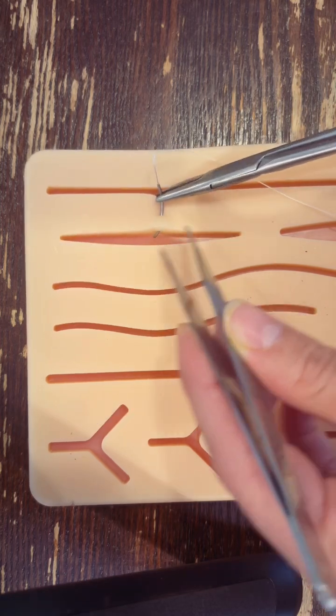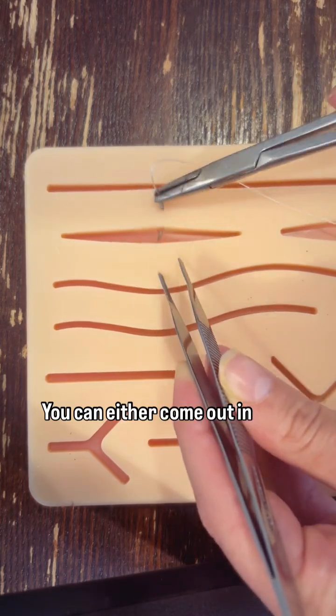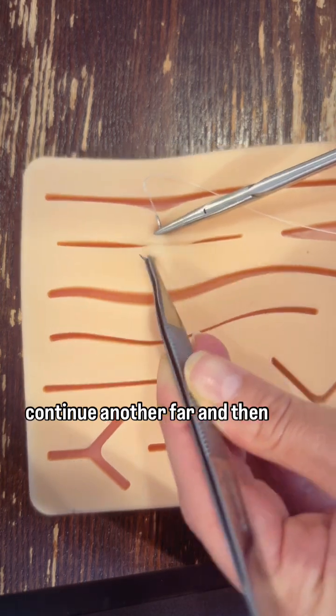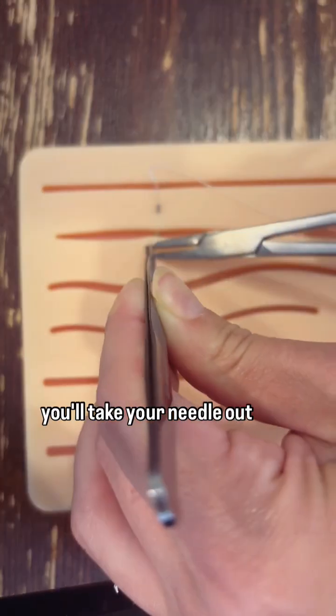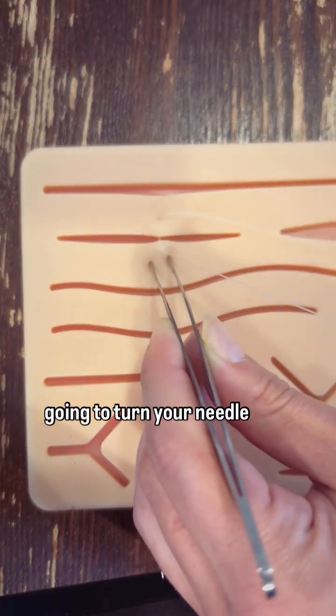Okay, so let's do it. Far - you can either come out in the middle or you can just continue another far. Then you'll take your needle out, and you're going to turn your needle around in your needle driver and backhand it to do your near near.